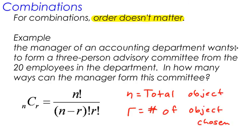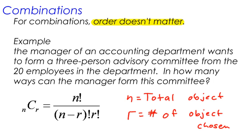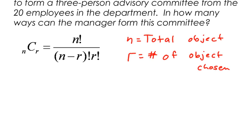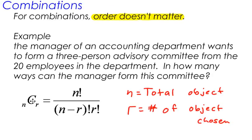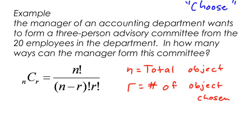When we talk about permutations, I like to use the words pick and place. But with combinations, since we're dealing with a C, I just like to use the word choose. We are choosing a group of people or a group of somethings. So let's take a look at our example here.